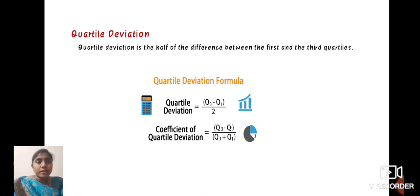Quartile deviation is the half of the difference between the first and third quartiles, which means Q3 minus Q1. Quartile deviation equals Q3 minus Q1 divided by 2, and the coefficient of quartile deviation equals Q3 minus Q1 divided by Q3 plus Q1.